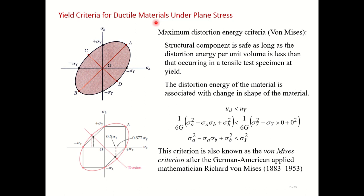This completes the Von Mises criteria for ductile material under plane stress conditions. We will now move on to the failure criteria for brittle materials. Thanks for watching this video, and see you in the next class.